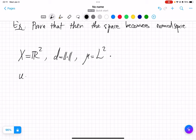My function, which is from R^2 into R, is u(x) equals 0 if x is other than (0,0), and u(0,0) is equal to 1.